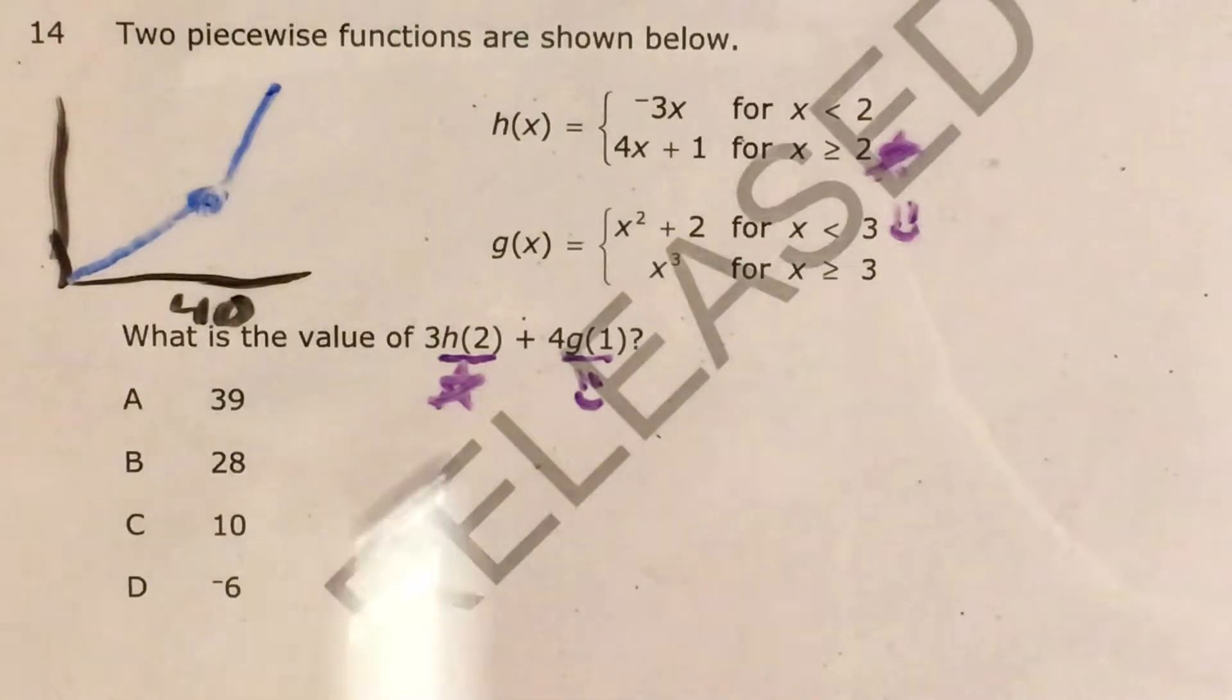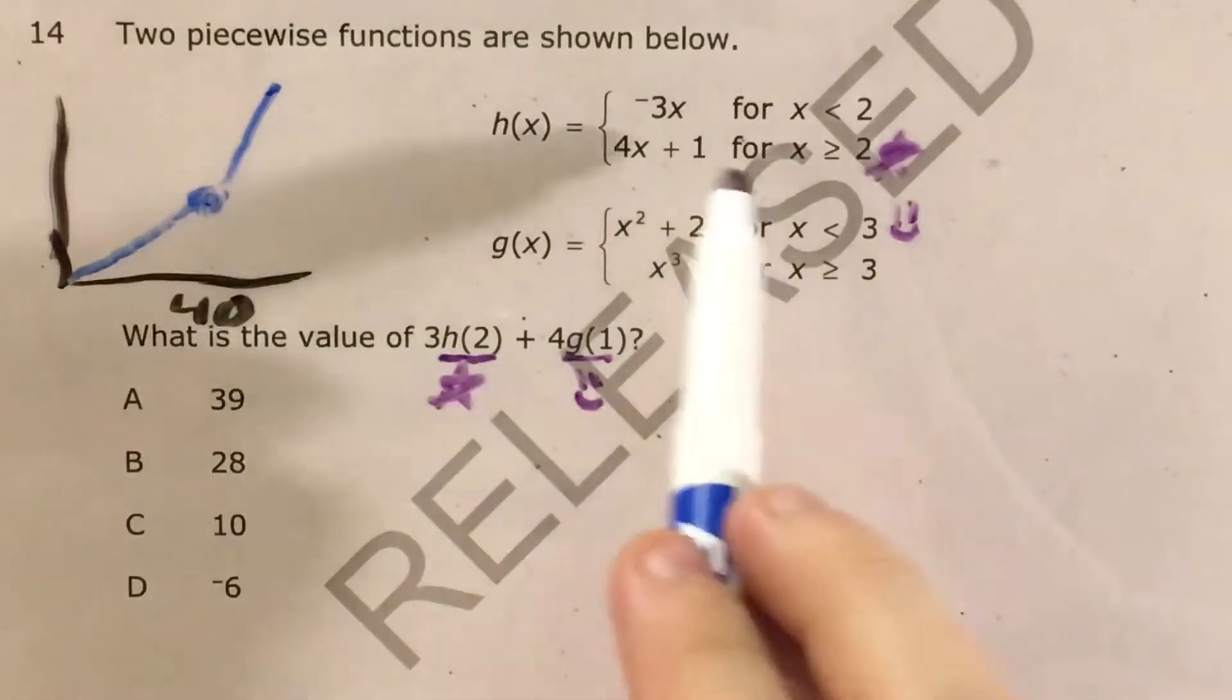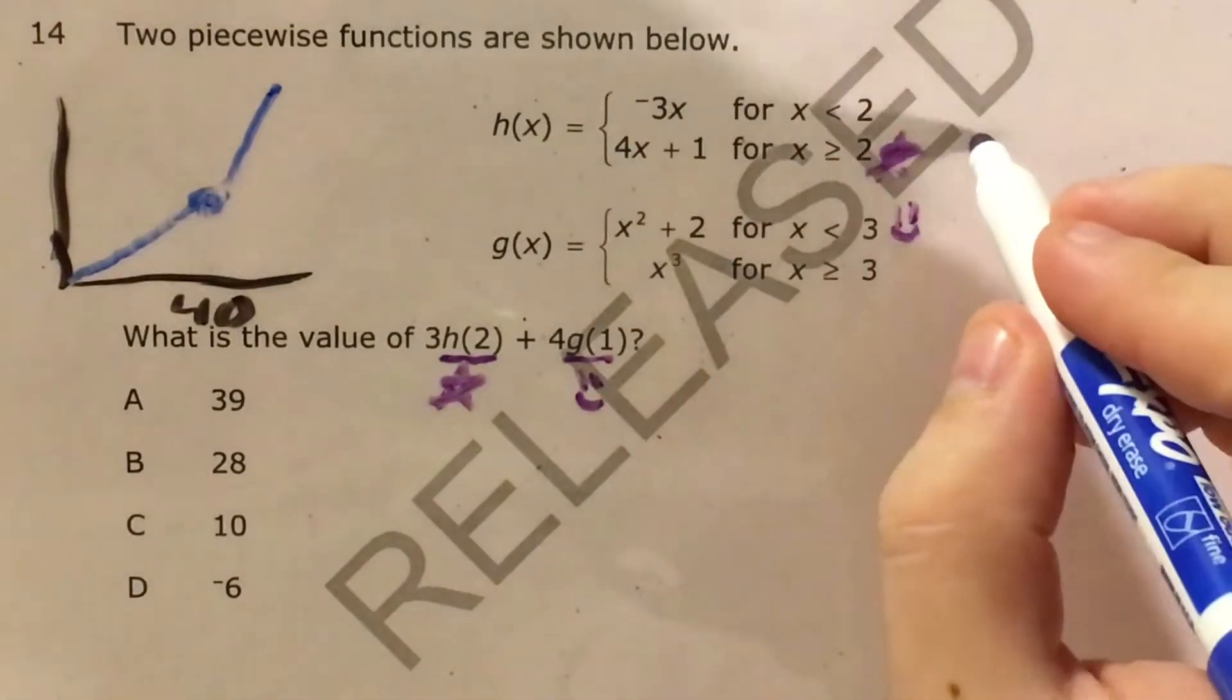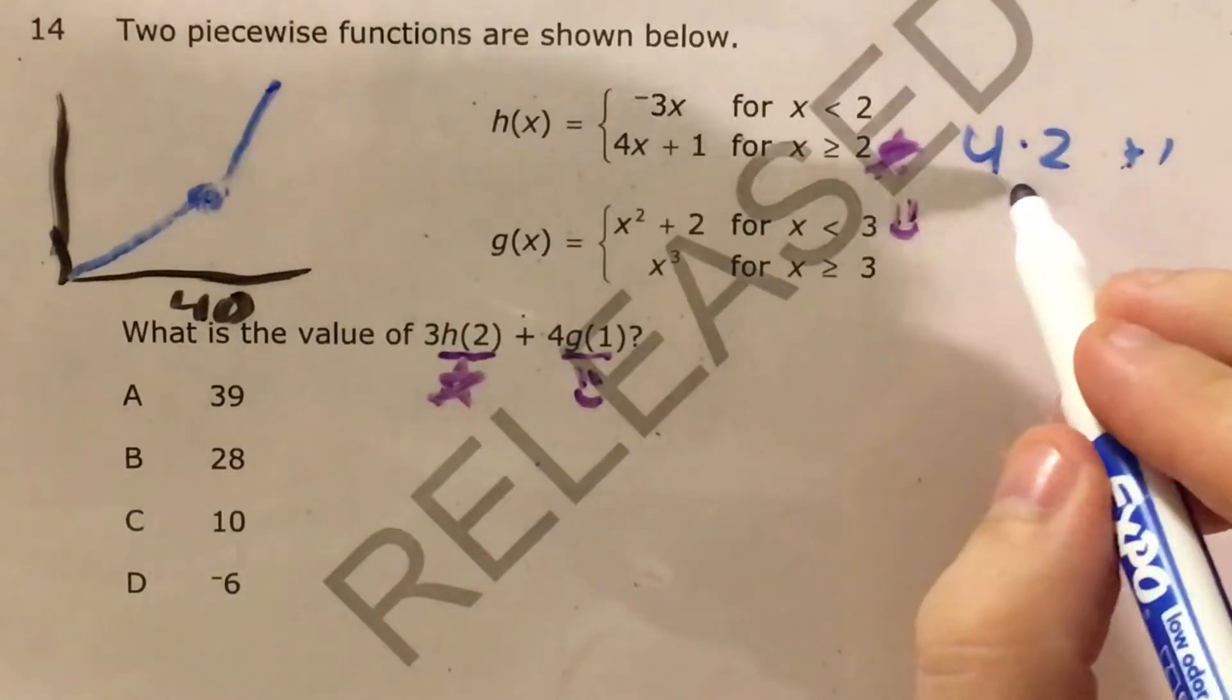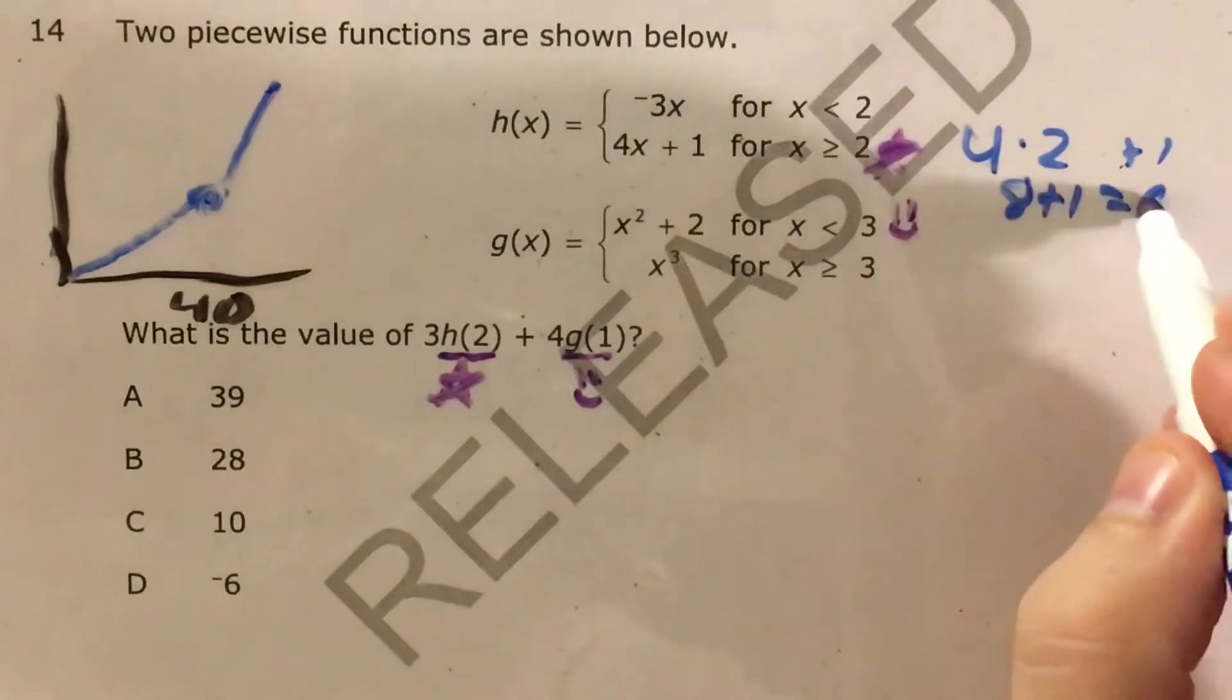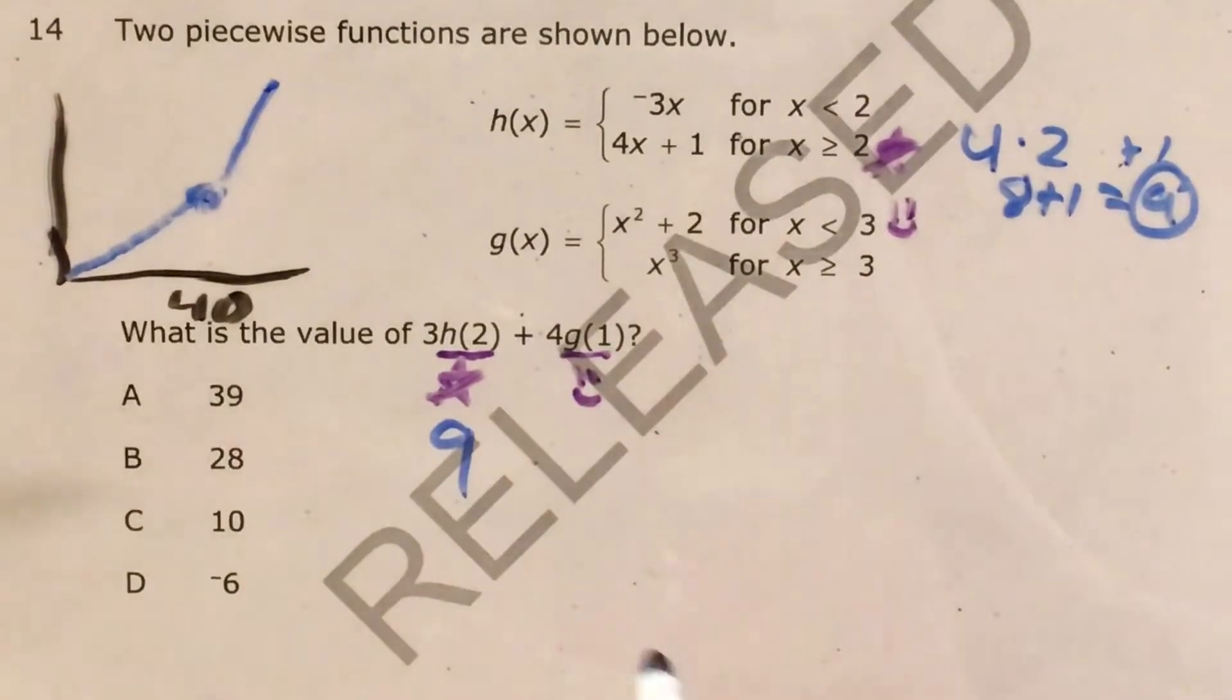Let's get started with this process of plugging in. H of 2, I plug 2 in here, that becomes 4 times 2 plus 1, 4 times 2 is 8, plus 1 is 9. So H of 2 is 9.